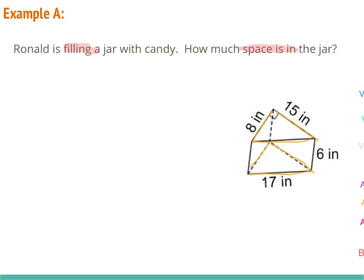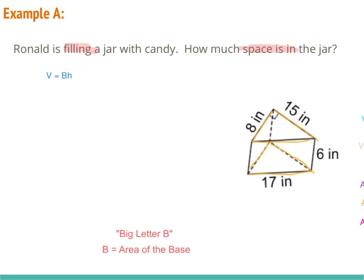We're going to pull out our formula sheet and determine that volume equals capital B times H. Capital B means the area of the base — anytime we have big B, it equals the area of the base. So we need to figure out the area of the base and multiply by H, which is height. Since the base of our shape is a triangle, we need the area formula for a triangle.